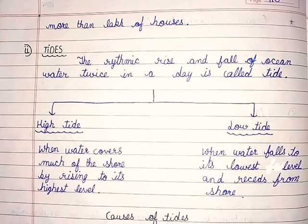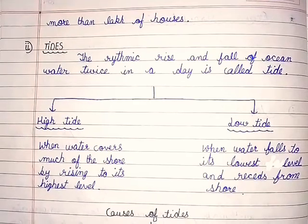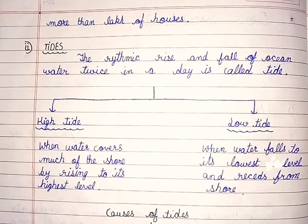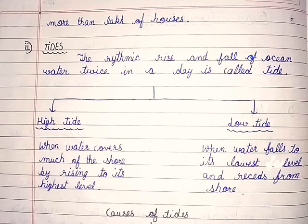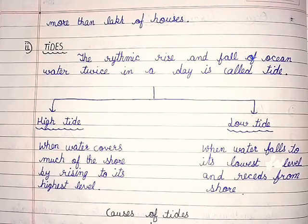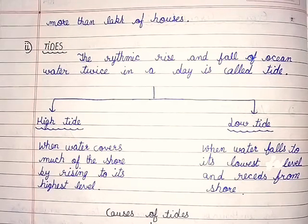Tides — the rhythmic rise and fall of ocean water twice in a day is called a tide. High tide: when water covers much of the shore by rising to its highest level. Low tide: when water falls to its lowest level and recedes from the shore.